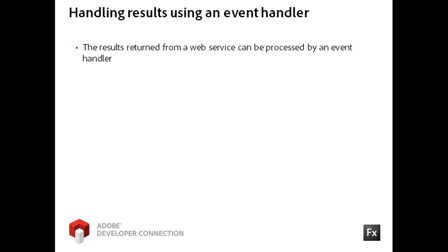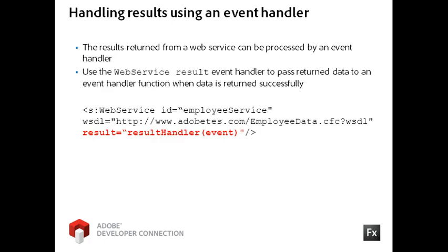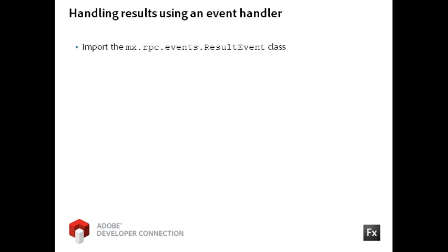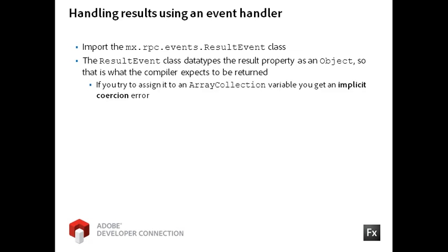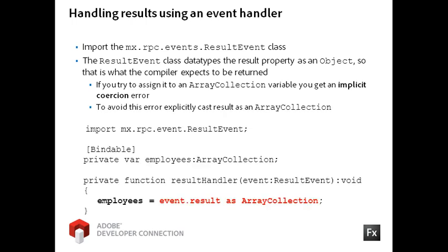You handle the result event like you would any other event on a component in the Flex framework. The result event is placed on the component with a defined event handler, which passes the event object as the one argument. The event object is typed to the mx.rpc.events.ResultEvent class, which you must import. The ResultEvent class data-types its result property as an object, so if you try to assign the result data to an ArrayCollection variable, you will get an implicit coercion error. Therefore, you must use the as operator to cast the result property as an instance of the ArrayCollection class.